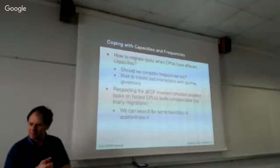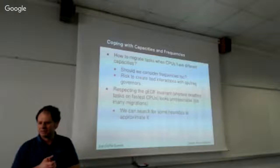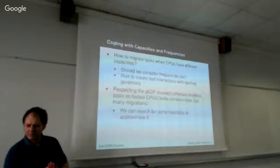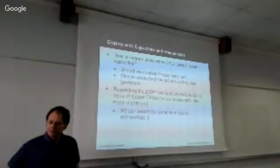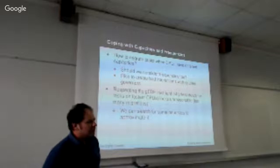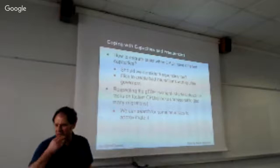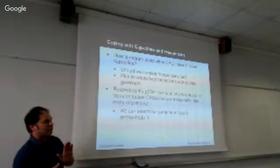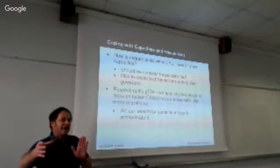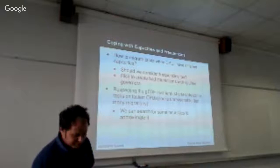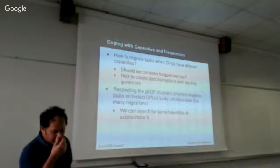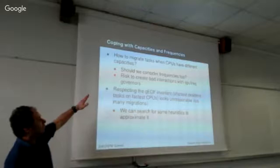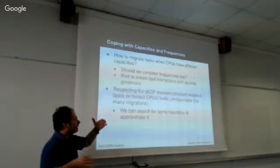The deadline scheduler already influences frequency selection. The first step is capacity awareness without worrying about the energy part. If we start caring about energy later, we can add frequency support. The concern was that by migrating tasks we can force a frequency change, but if we made the migration decision based on the current frequency, that decision could become invalid. After discussion, the conclusion was: start with capacity only, then make things more complex later. Respecting the Global EDF invariant of matching shorter-deadline tasks to faster CPUs requires many potentially useless migrations, so a more practical heuristic approach is preferred.